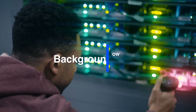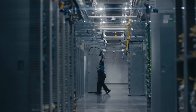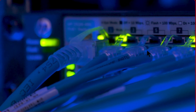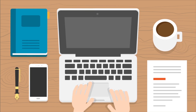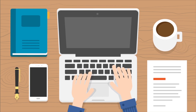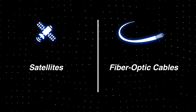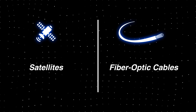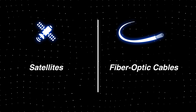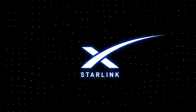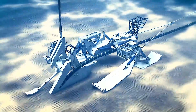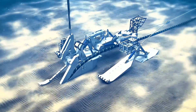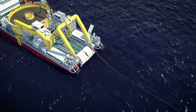Before you can watch this video, the journey began with us uploading it to YouTube servers in the US. These servers, which are essentially powerful computers, store and manage access to the video. Your task is to connect to these servers via the internet to access the video. There are two primary methods of transmitting internet data globally: satellites and fiber optic cables, which run in the oceans. While satellite technology such as Starlink exists, it is still evolving and currently less efficient than undersea cables.